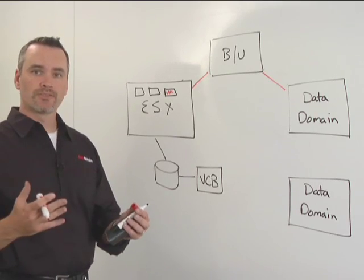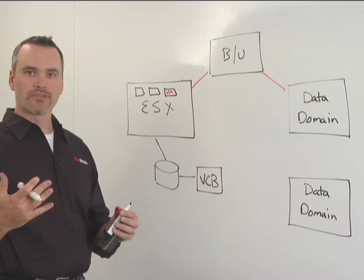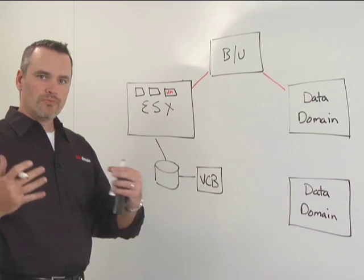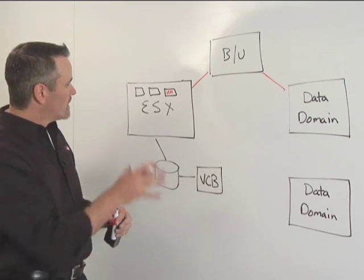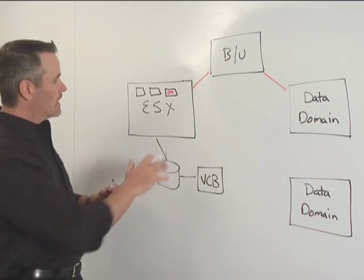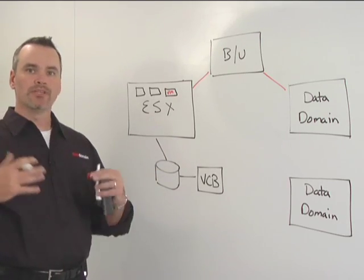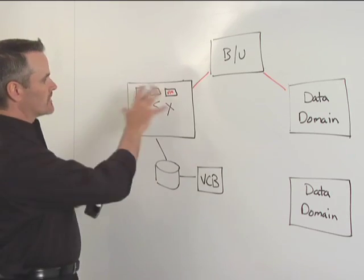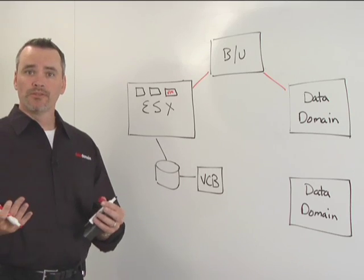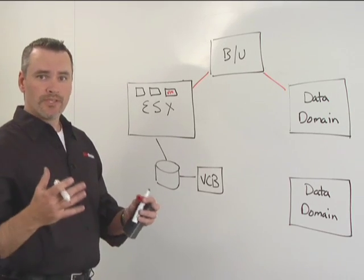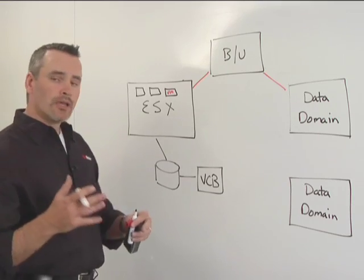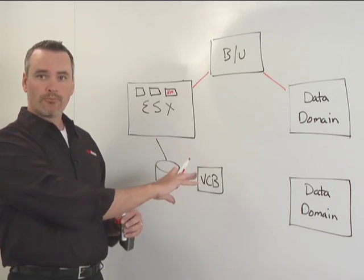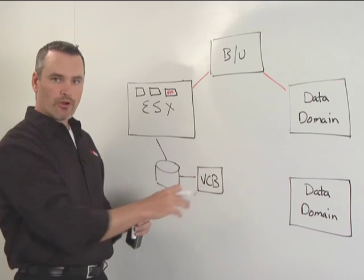But for some customers that doesn't scale, and as you start to put more and more production VMs in your environment, you'll want to change things around. For customers who need absolute uninterrupted access to ESX — no backup windows, with no disturbance to the environment — what they use is VCB. VCB stands for VMware Consolidated Backup, and it provides the ability to offload the backup process to a VCB proxy server.